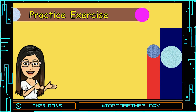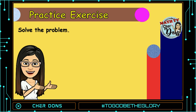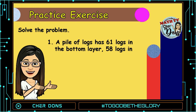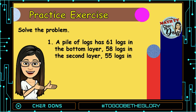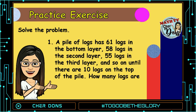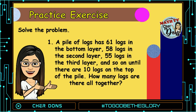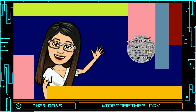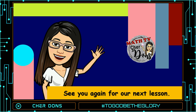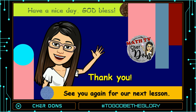Now, it's your time to practice. Solve this problem: a pile of lugs has 61 lugs in the bottom layer, 58 lugs in the second layer, 55 lugs in the third layer, and so on until there are 10 lugs on top of the pile. How many lugs are there altogether? Don't forget to comment down your answers so we can check it. Good luck! I hope you enjoyed our discussion for today. See you again for our next lesson. Thank you, have a nice day, and God bless everyone!